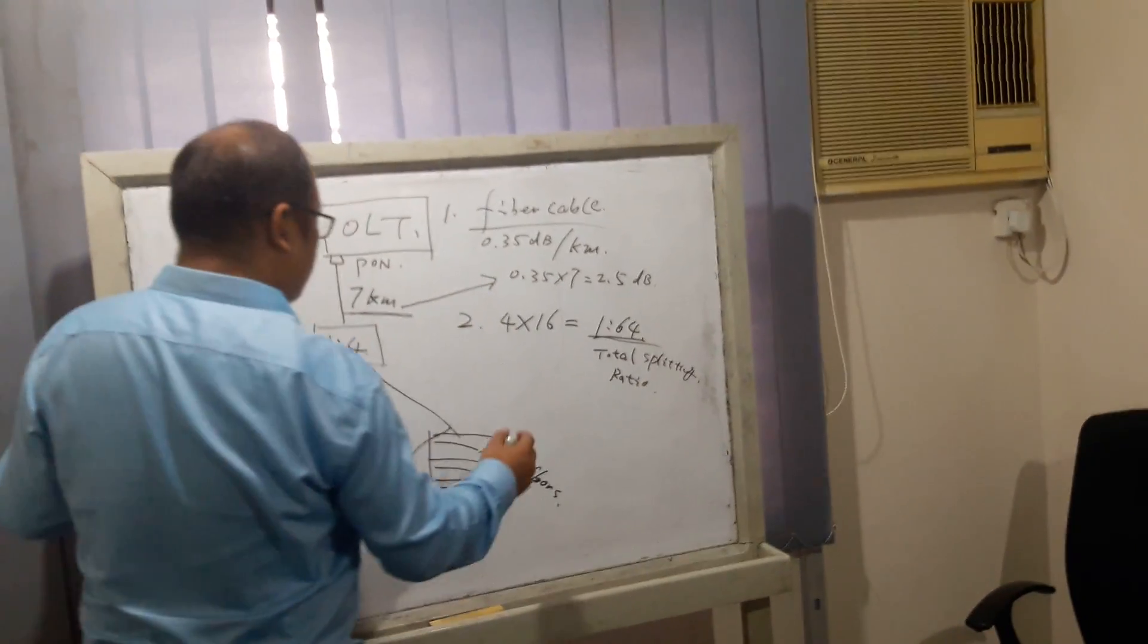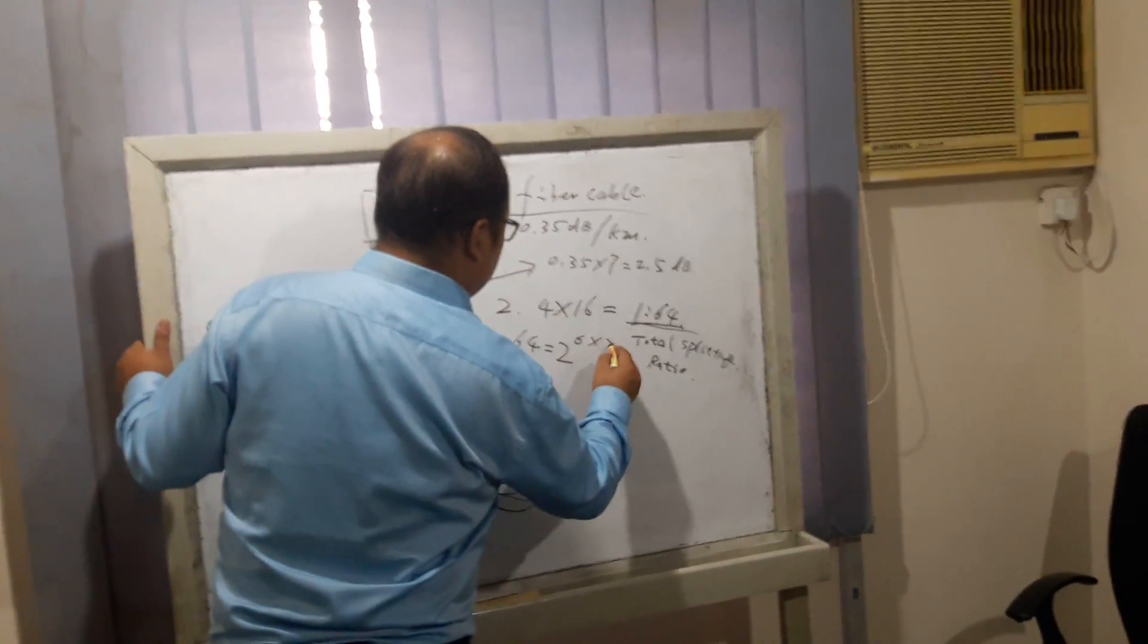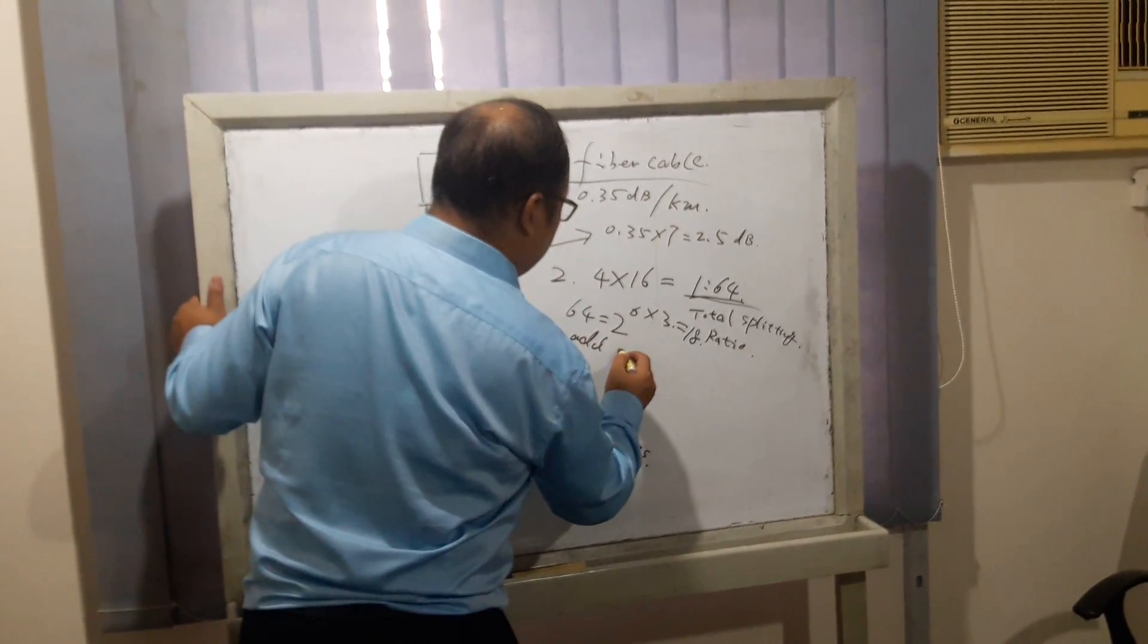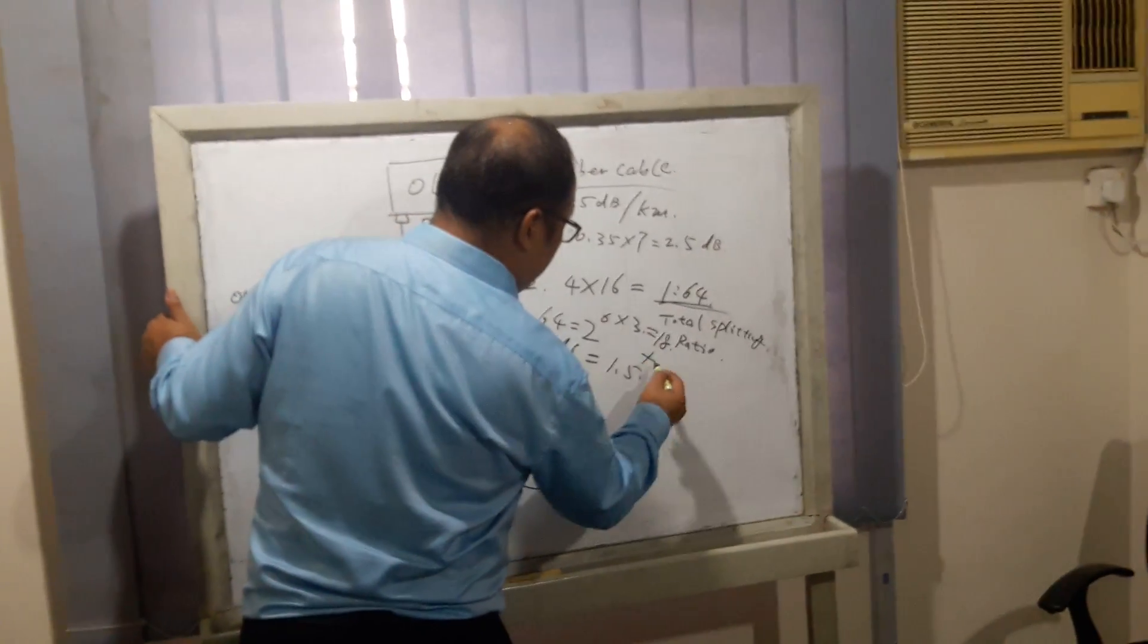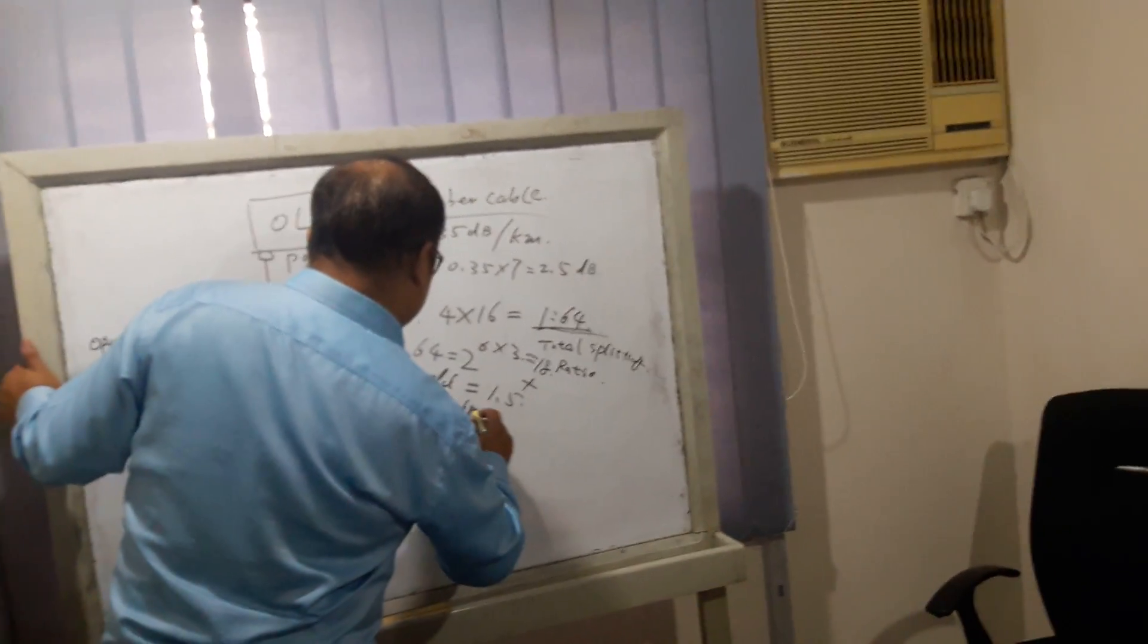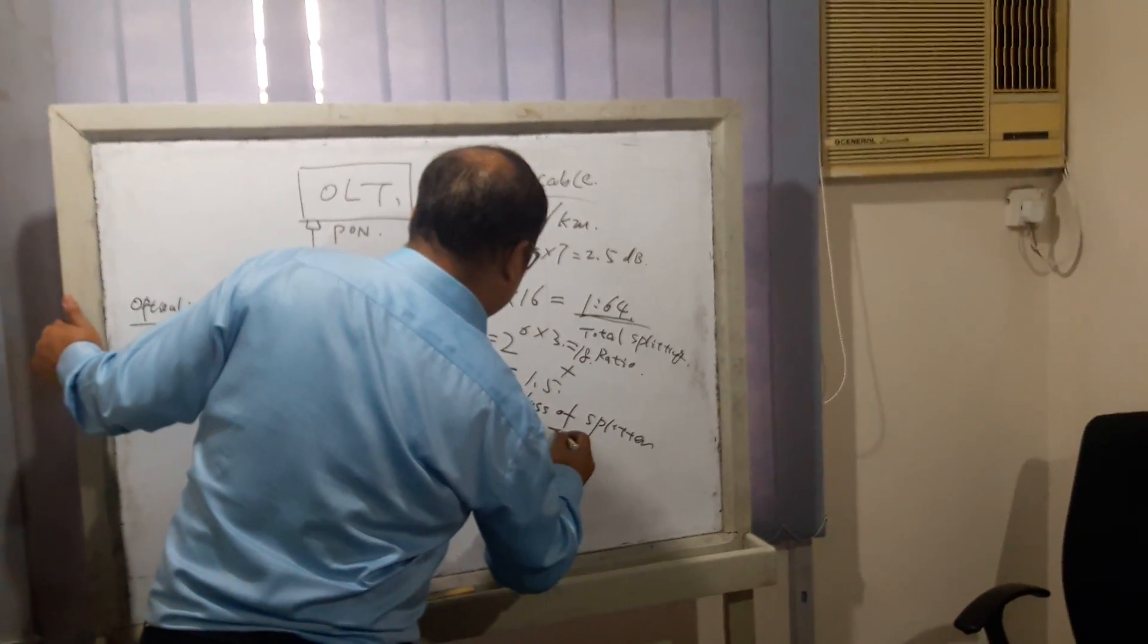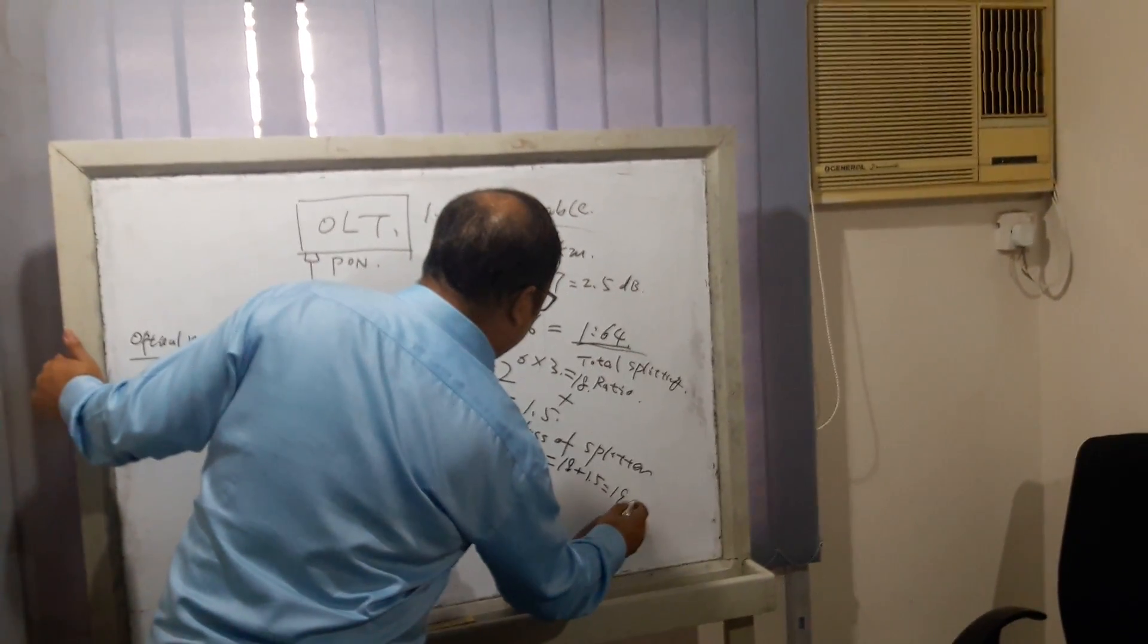For 1:64, the basic attenuation is 18 dB, and the additional attenuation of the splitter is about 1.5 dB. So the total attenuation of the splitter is 18 plus 1.5, which equals 19.5 dB.